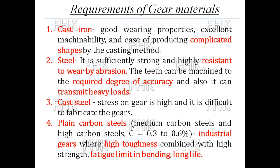Now, let's look at the different materials used for manufacturing gears. First is cast iron. This material possesses special qualities: it has good wearing properties, excellent machinability, and ease of producing complicated shapes by the casting method. Cast iron has high flowability compared to other materials, so molten cast iron flows easily into mold cavities — even small ones — when manufacturing gears by casting. That's why cast iron is preferred when complicated shapes need to be manufactured.